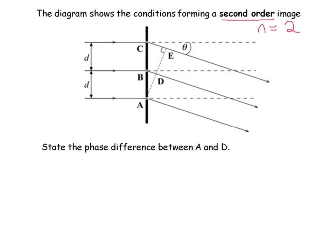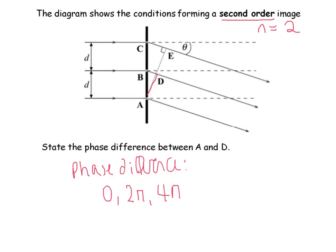The first part asks to state the phase difference between A and D. A and D are along this wavefront line here. Wavefronts are created by waves constructively interfering with each other — it's the point of maximum interference. So along that line, the waves are all in phase, meaning the phase difference would be zero. Or it could be a multiple of 2π, so 4π, etc., which correspond to 360°, 720°, and so on.